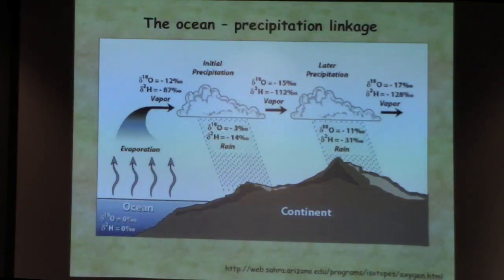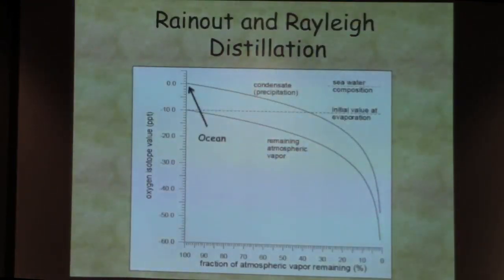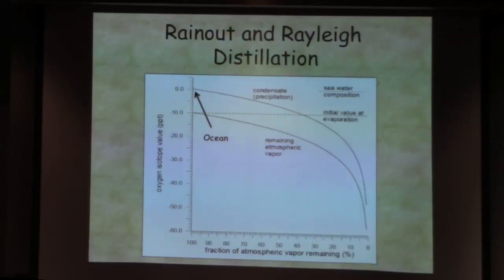Evaporation gives you water vapor that's depleted in oxygen-18. As your storm systems and water vapor move up over the continents, you start losing the heavier isotopes — basically, you're getting water that's more and more depleted in oxygen-18. This is the classic Rayleigh fractionation curve, where you can see the δ¹⁸O of the ocean is around zero SMOW.